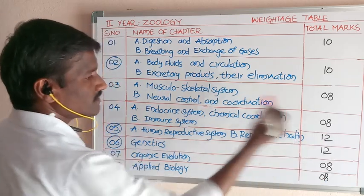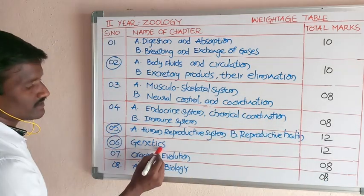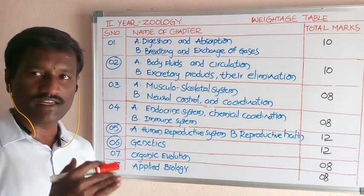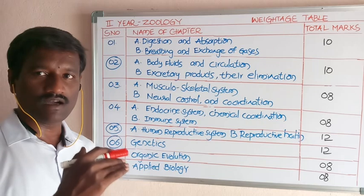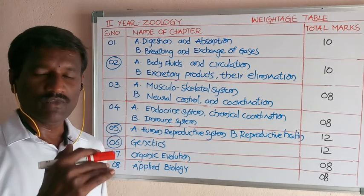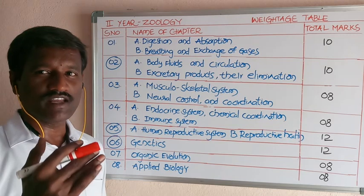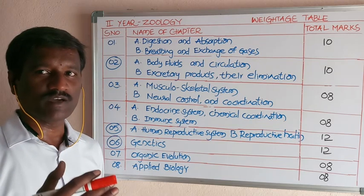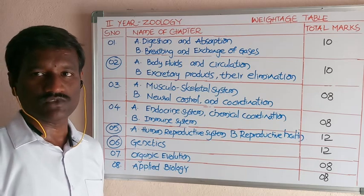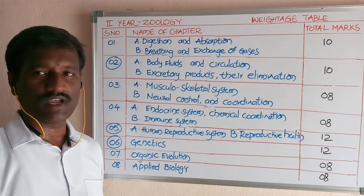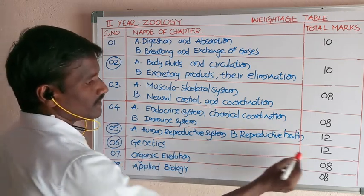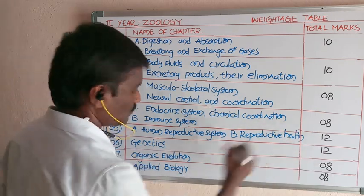The sixth chapter is genetics. Genetics deals with heredity and variation in living organisms, including the role of DNA in passing traits. The weightage of the sixth chapter is 12 marks.